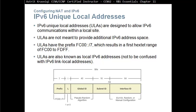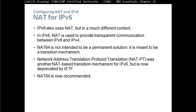IPv6 unique local addresses range from fc00::/7, resulting in the first hex range of fc00 to fdff. They are also known as local IPv6 addresses, distinct from link-local addresses which use fe80 and are only available on the local link. IPv6 private (unique local) addresses can cross network boundaries, unlike link-local addresses.